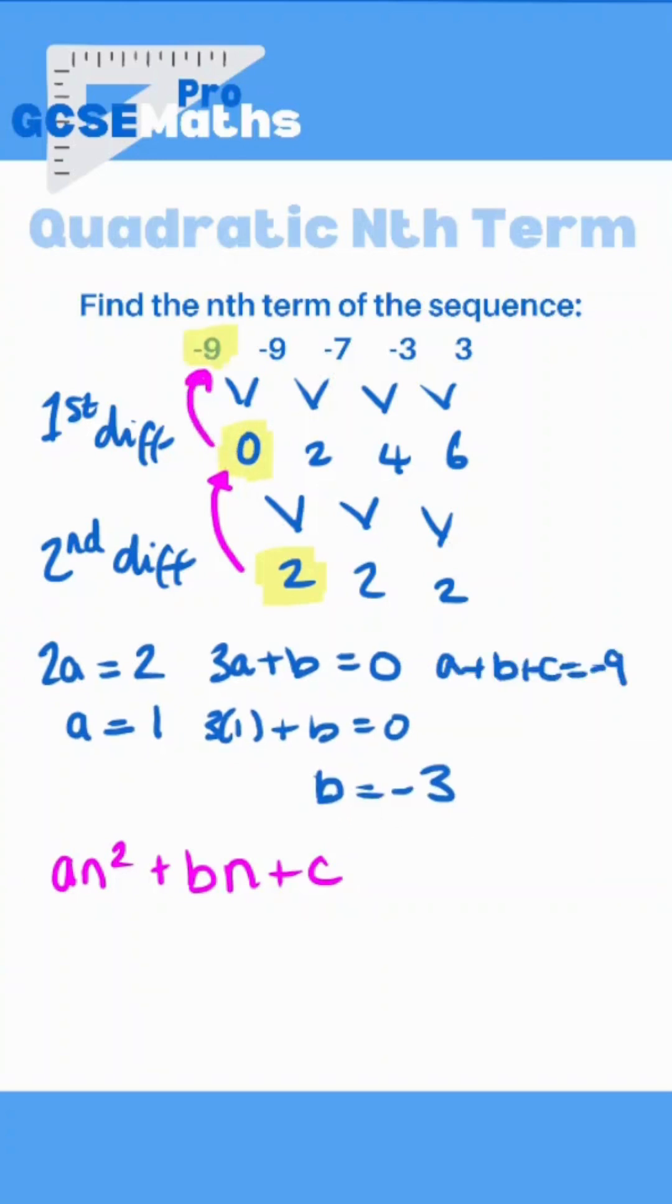Then we jump up again where a plus b plus c will always equal the first term. So c is minus 7. The last thing we're going to do is write out a, b, and c in this format here, which gives us 1n squared, or just n squared minus 3n minus 7. That's the nth term of the sequence.